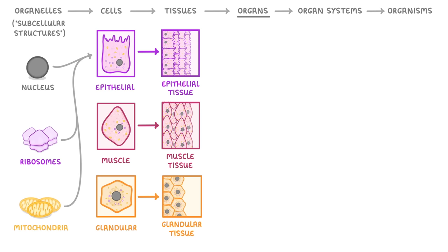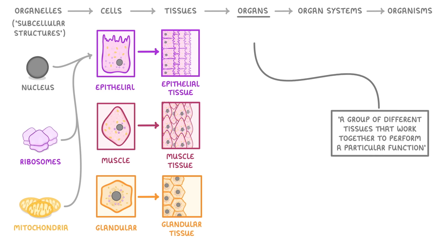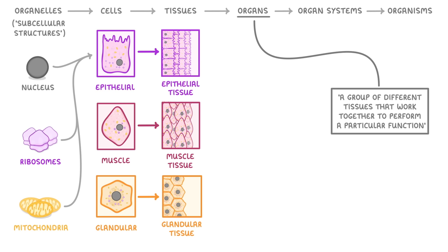The next level is the organ, and the definition of an organ is a group of different tissues that work together to perform a particular function. So as you can see, the definition is pretty much the same as the one for a tissue, except instead of a group of similar cells, it's a group of different tissues.